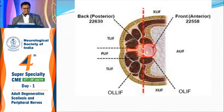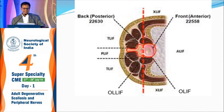TLIF is minimally invasive or commonly done through the transforaminal route. PLIF — people have now stopped doing posterior lumbar interbody fusion. OLLIF is something done with an endoscope: when you do a transforaminal endoscopic discectomy or PLED, you can also place an expandable cage through that — that is called oblique lumbar interbody fusion.